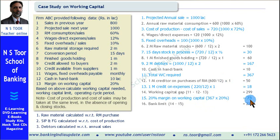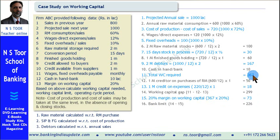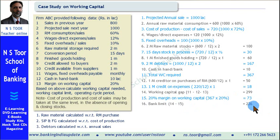What remains after the margin is the bank limit. So this is the working capital gap; out of this, 73 is the margin which the borrower will bring, and the remainder is the bank limit. Hence the 367 total working capital has been financed by creditors, by credit on expenses, by working capital margin, and by bank limit — and the total of these four should equal the total working capital required. This is the amount of working capital limit.